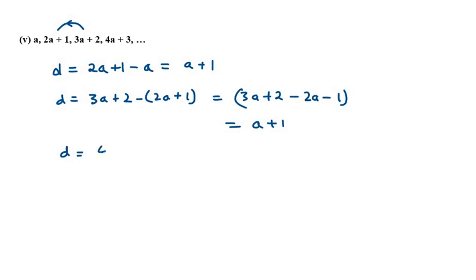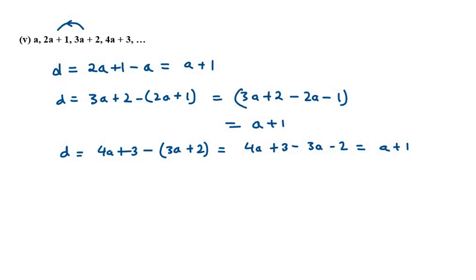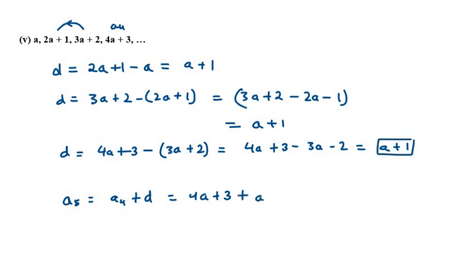In the next check: 4a+3 minus (3a+2), which is 4a+3 minus 3a minus 2, giving a+1 again. So every place our D is the same. Now we need to find A5. A5 will be A4 plus D. A4 is 4a+3, so adding D which is a+1 gives 5a+4.